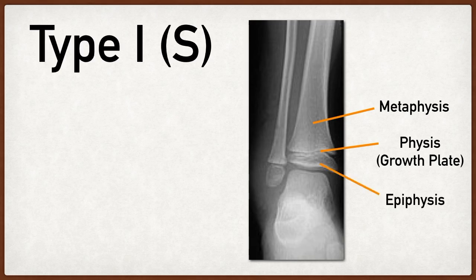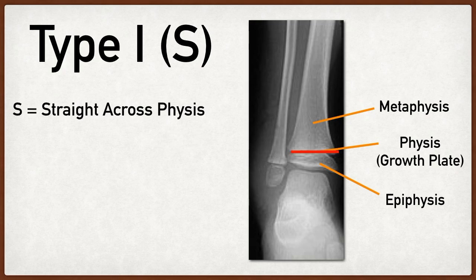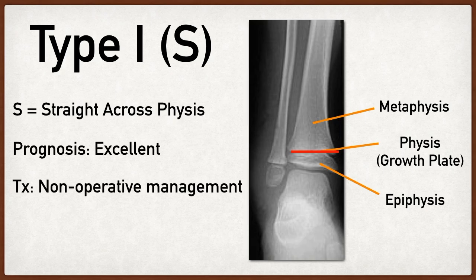A type 1 Salter Harris fracture is a fracture that goes straight across the growth plate, and the way to remember this is using the letter S for straight across. It has an excellent prognosis and treatment is usually non-operative.